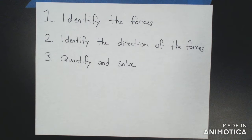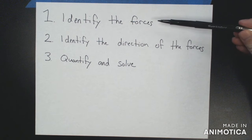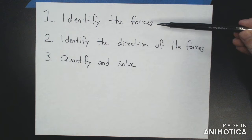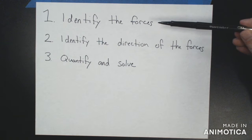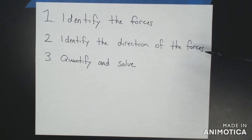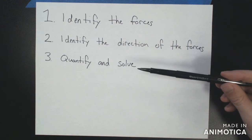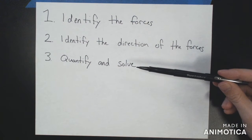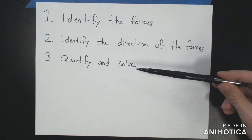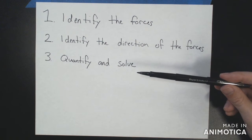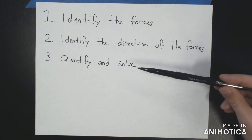Let's start with some basic strategy on how to deal with force problems. First, we need to identify the forces acting on our object. We can only look at one object at a time, but a single object can have multiple forces acting on it. We need to identify all of those forces and figure out what direction they are attempting to move the object. Once we have our list of forces, we can quantify things and solve — apply numbers to our situation and get a final answer. That's our three-step strategy for dealing with force problems.